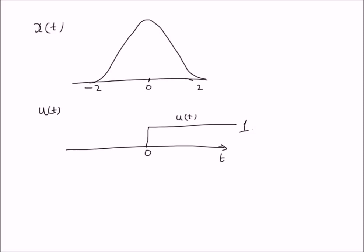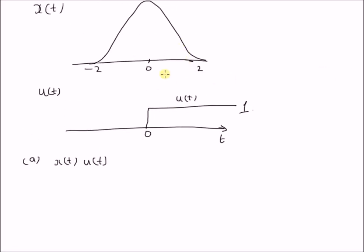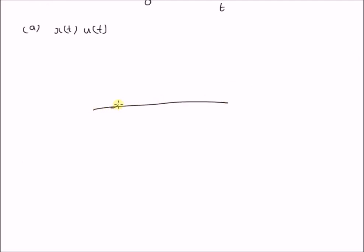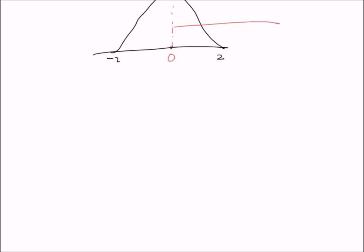Given these two signals, let us find the following products. The first one is x of t multiplied by u of t, which is a straightforward product of these two signals. Since x of t is a Gaussian signal between minus 2 and plus 2, and u of t equals 1 for values of time greater than 0, the product is non-zero between 0 and 2, and 0 for values of t less than 0 and t greater than 2.